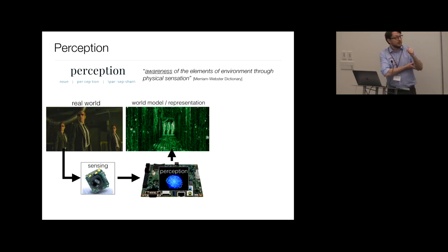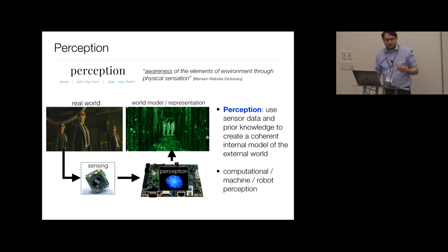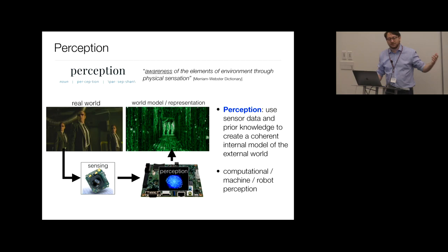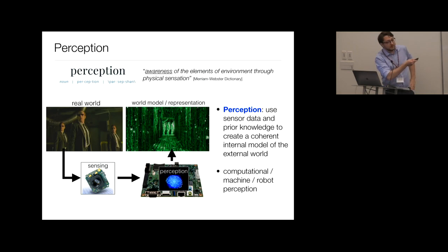What is the difference between perception and sensing? Perception is by definition the awareness of elements of the environment through physical sensation — that's the dictionary definition. My robotic definition: perception is the use of sensor data and prior knowledge to create a coherent internal model of the external world, to be used by a robot. I really like the image of the robot observing the real world using sensors, and using perception — both hardware and algorithms — to process sensor data and build an internal model.